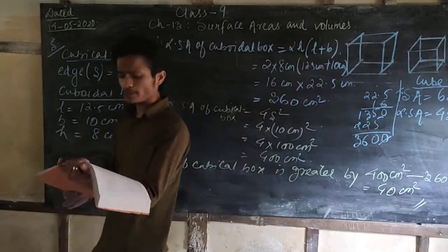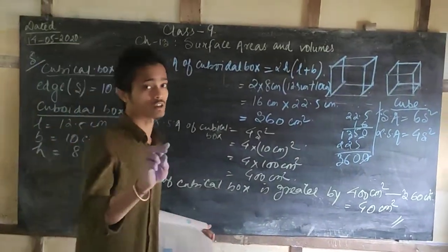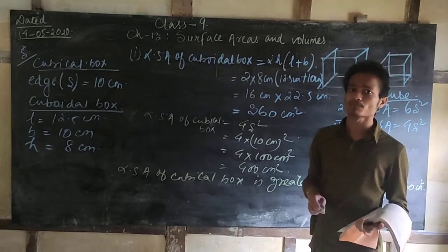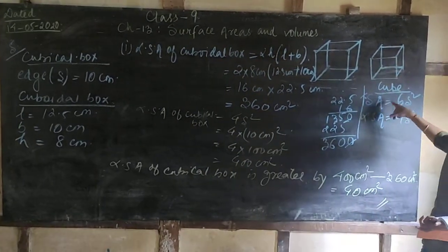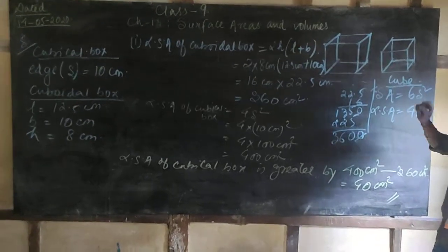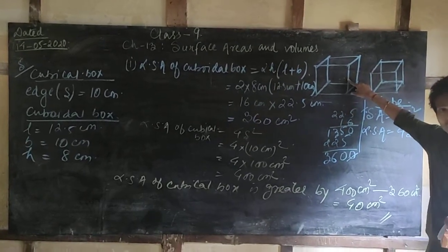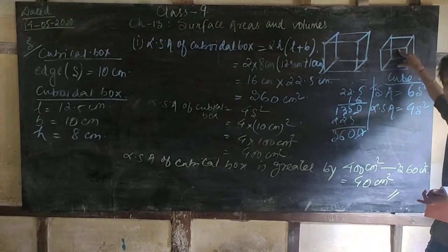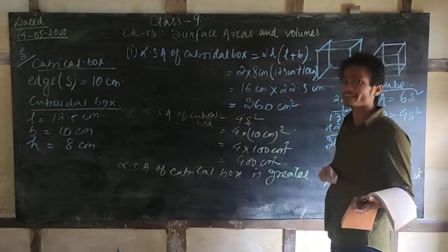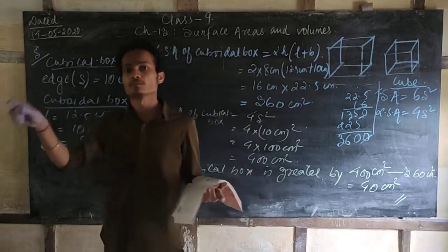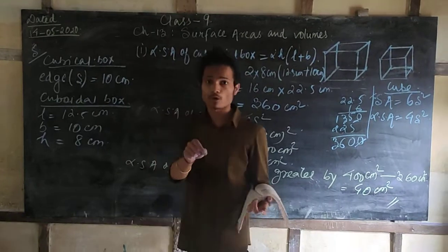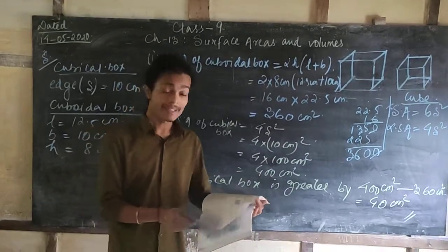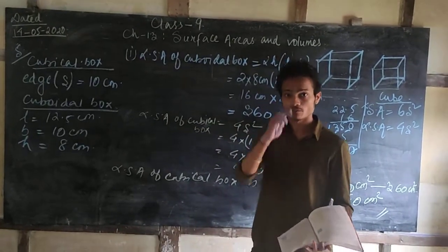For Part 2, we need to find which box has the smaller total surface area. Total surface area means all six sides. For the cuboidal box, use 2(LB + BH + LH); for the cubical box, use 6S². Find both values, see which is smaller, and subtract to find the difference. I hope you understood — please do Part 2 yourself. If any problem arises while solving, mention it in the comment section. In the next video I will cover questions 6, 7, and 8. Thank you, see you in the next video.